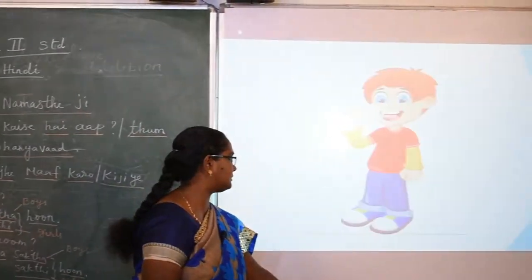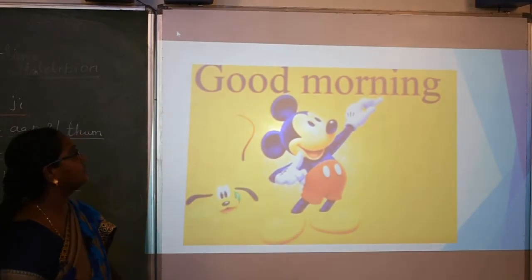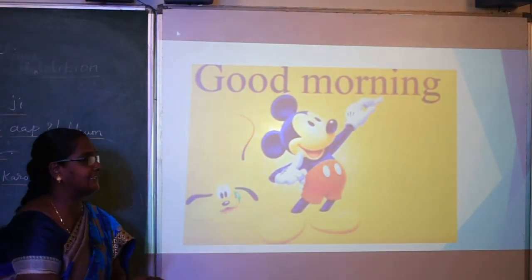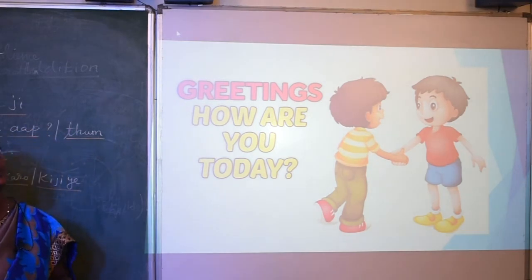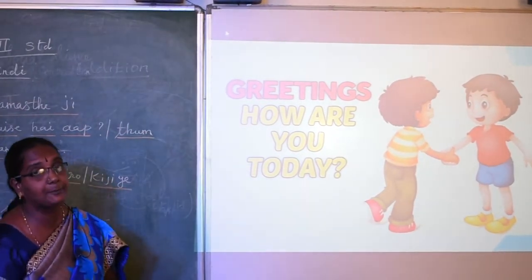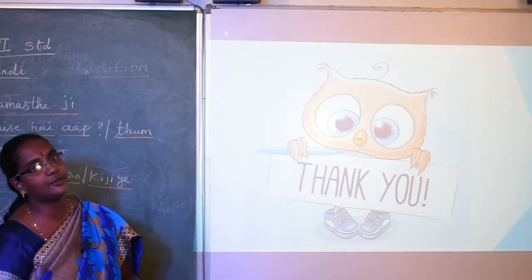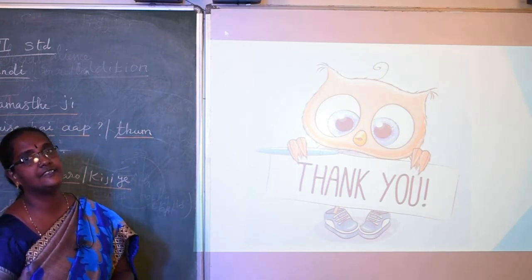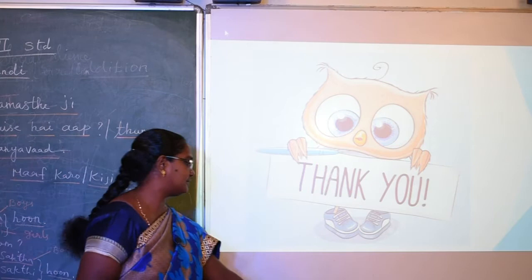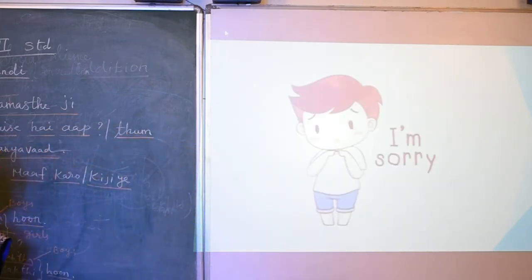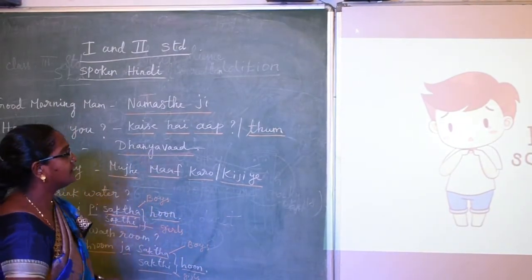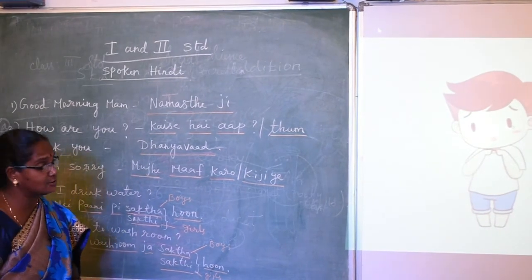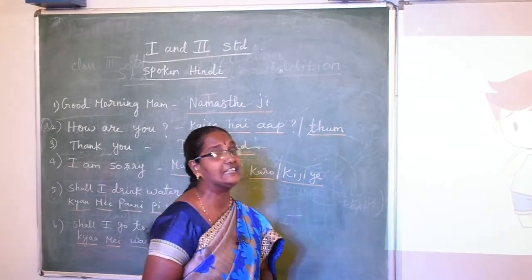Now let's repeat everything from the beginning. Good morning — 'Namaste ji.' How are you to a friend — 'Kaise hai tum?' How are you to an elder — 'Kaise hai aap?' Thank you — 'Dhanyavad.' I am sorry to elders — 'Mujhe maaf kijiye.' I am sorry to friends — 'Mujhe maaf karo.' 'Mujhe maaf karo' is singular for friends; 'Mujhe maaf kijiye' is plural for elders.